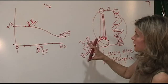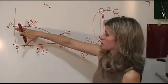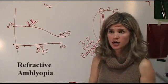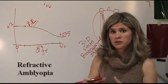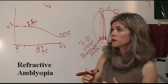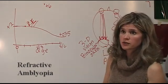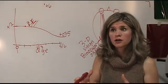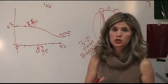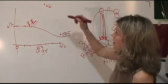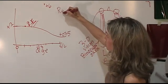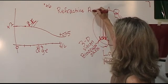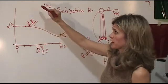Referencing this curve again — this would be the child that has one eye that's a lot more farsighted than the other. This is the child that is not caught at the pediatrician's office because the eyes look perfectly straight and perfectly normal. This is actually the leading cause of amblyopia and the leading cause of blindness for adults age 20 to 60, because it is so easily missed in kids. This is called refractive amblyopia, because it is due to a difference in refractive errors.